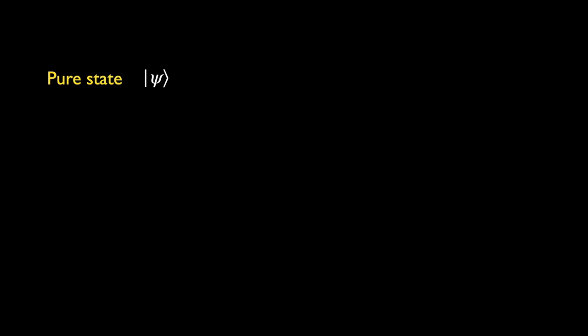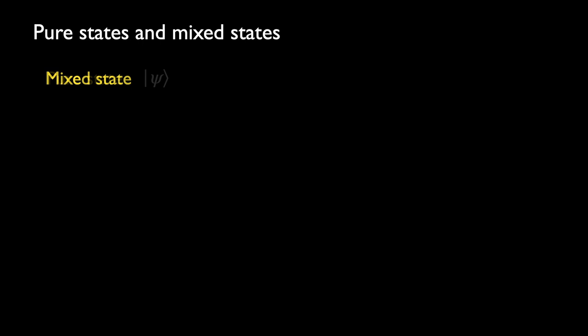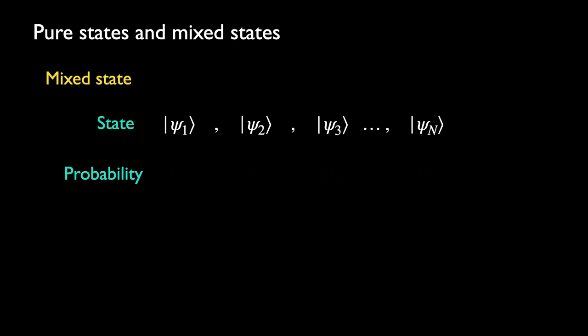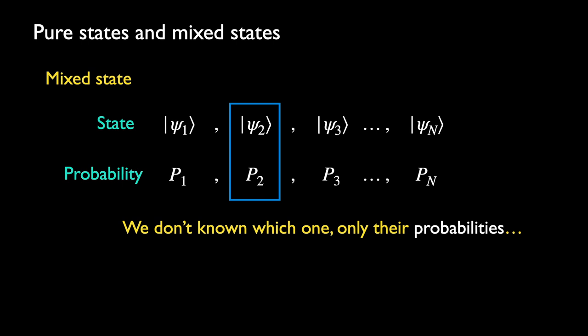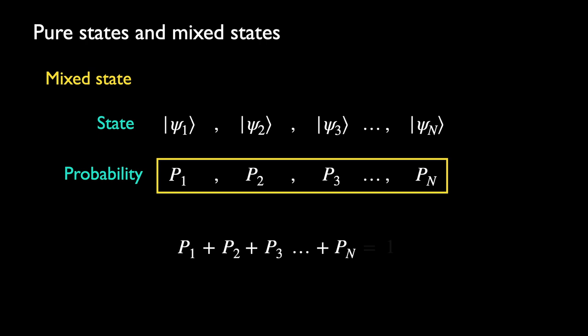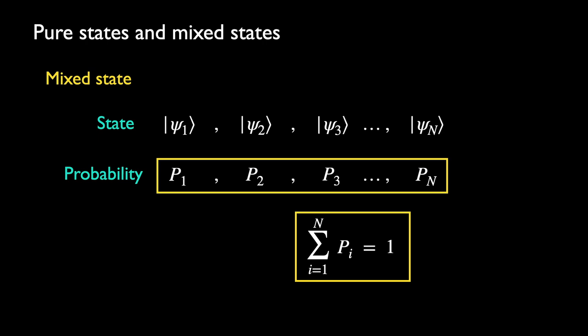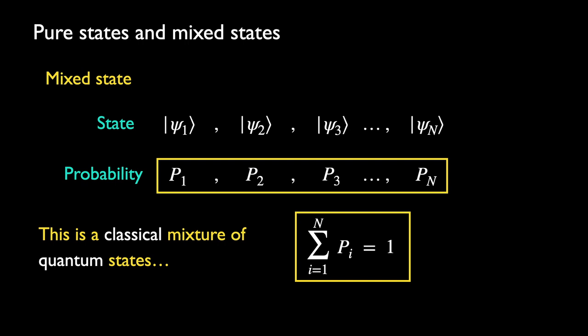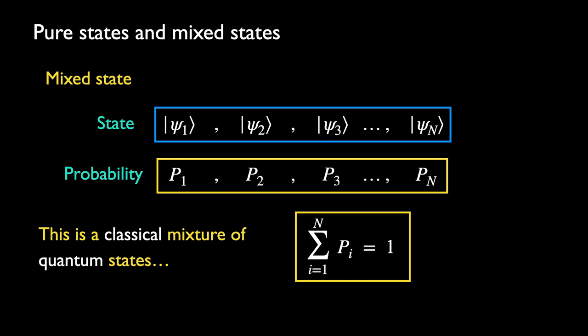Up till now, the states we have been looking at are what is known as pure states — vectors in Hilbert space. We now introduce another kind of state called the mixed state. This is the situation where the system is in some state among an ensemble of states; we just don't know exactly which one, only their probabilities. These probabilities sum to one. This is what is known as a classical mixture of quantum states — classical in the sense that the system is definitely already in one of these states; we are just uncertain about which. There are only quantum uncertainties within each state vector.